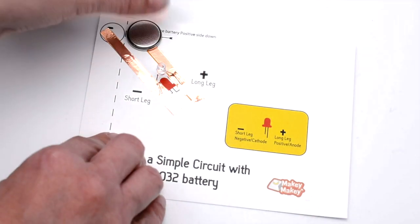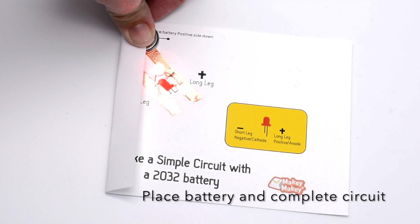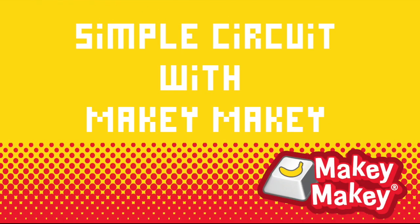And then once you've got that, you're ready to put your battery down, positive side down, and fold it over and voila, you've made a simple circuit. It's pretty easy to make those electrons flow.